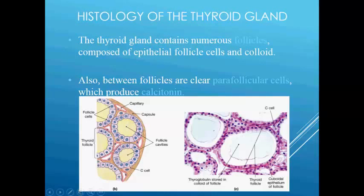The cuboidal epithelium secretes two hormones: T3 and T4. T3 is also called triiodothyronine and T4 is also known as tetraiodothyronine or thyroxine. These are synthesized in the thyroglobulin present in the cavity. Some isolated clusters of cells are found in the connective tissue between the follicles and they are called parafollicular cells or C-cells.